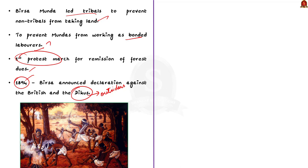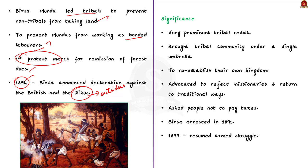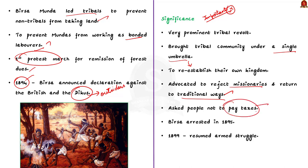The Munda Ulgulan is a very important rebellion among the various uprisings of tribals and peasants in India in the 19th century. During this struggle, Birsa Munda managed to bring the tribal community under a single umbrella and asked them to re-establish their own kingdom. He also advocated that tribal people reject the missionaries and return to their traditional ways, and asked them not to pay taxes. For these reasons, he was arrested in 1895 and released after two years.